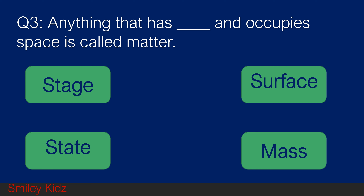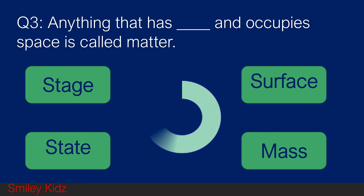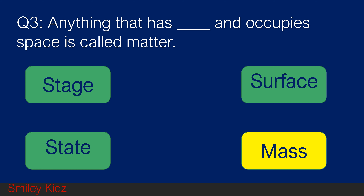Question number 3. Anything that has blank and occupies space is called matter. Option A stage, option B surface, option C state, and option D mass. Your time starts now. And your time is up. The right answer is mass. Anything that has mass and occupies space is called matter.